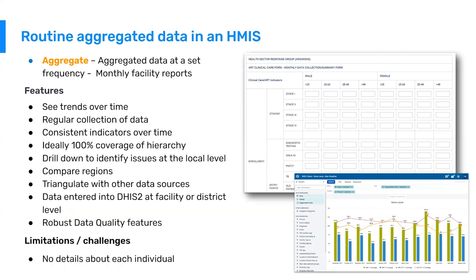There are some limitations. The biggest one is that there are no details about individuals. With aggregated data, you are not able to go down to the individual patient level — you can only see aggregated values across all patients. So if you have a health program that requires individual data, like adverse events from immunization, you're not going to get that level of granularity with aggregated data.